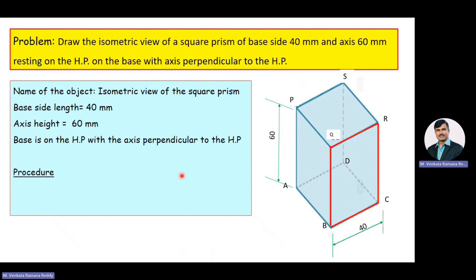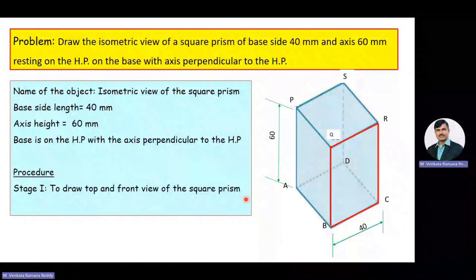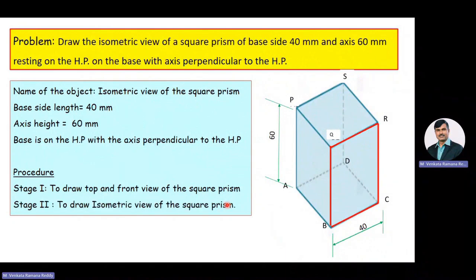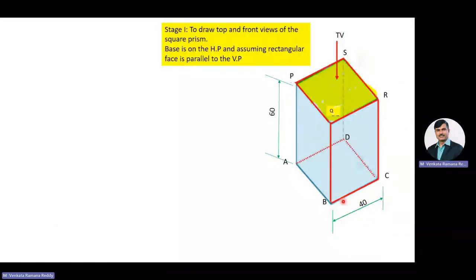The procedural methodology of drawing the isometric view of the square prism is divided into two stages. Stage one is to draw the top and front view of the square prism, and the second stage is to draw the isometric view of the square prism. In stage one, we will draw the top view and front view of the square prism when it is resting on its base on HP, assuming the rectangular face BQRC is parallel to the VP.